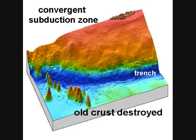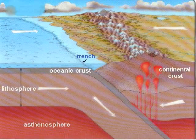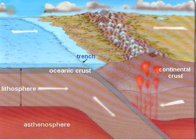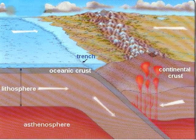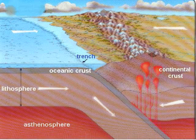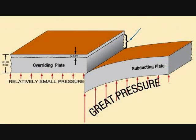One thing to note: oceanic plates, because of their denser composition of iron, are pushed down. Light continental crust, made of silicates, is pushed up. In all cases, the denser plate — whether oceanic crust against continental crust, or continental crust against continental crust — is pushed down.